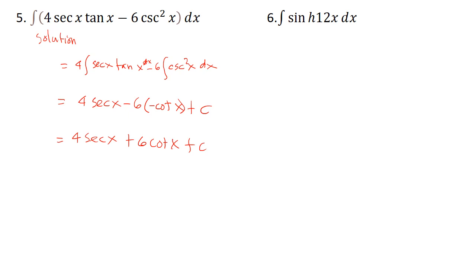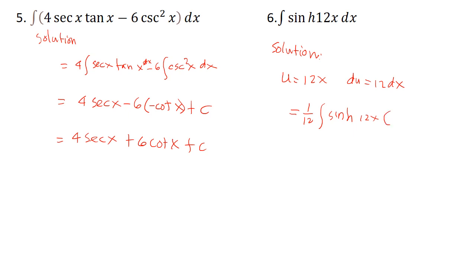For the hyperbolic example: integral of sinh(12x) dx. Let u = 12x, so du = 12 dx. The integral becomes (1/12) times integral of sinh(12x) times 12 dx, which equals (1/12) cosh(12x) + C.